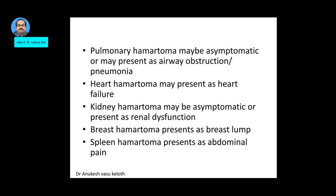For example, a pulmonary hamartoma may be asymptomatic or may present with airway obstruction or pneumonia. A heart hamartoma may present as heart failure. A kidney hamartoma may be asymptomatic or may present as renal dysfunction. A breast hamartoma may present as a breast lump, and a splenic hamartoma may present as abdominal pain.